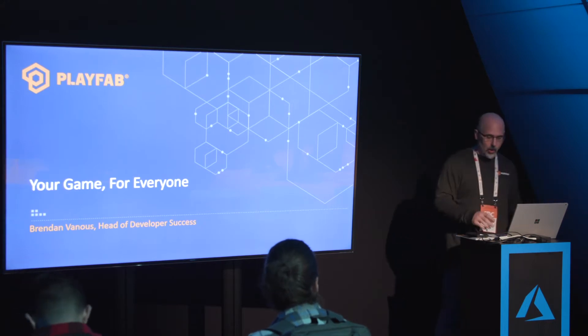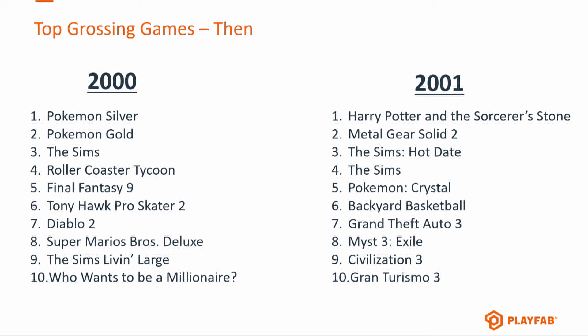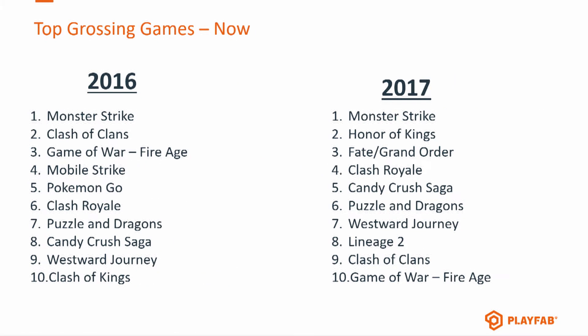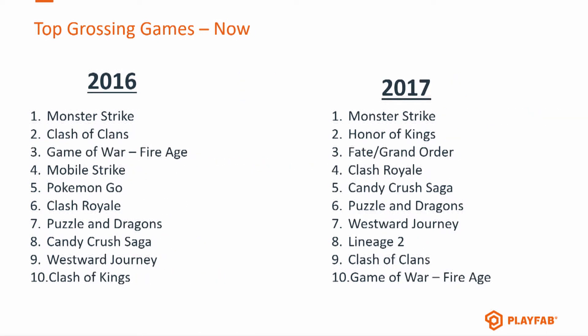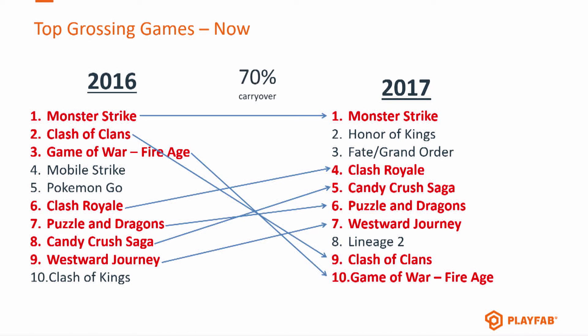I'll explain the concept as we go along, but to kick it off, I want to give you an idea of some of the changes in the market over the years. This is a projection from 2000 to 2001 — these are the top grossing games for those years. If you look carefully at the list, there's only one game in the entire list that transitions from 2000 to 2001. Almost all of these are either PC games or console games of some kind, handheld consoles of some type. But if you look at the 2016 to 2017 chart, you're looking at almost entirely mobile games. And in fact, 70% of them were the same game from year to year.